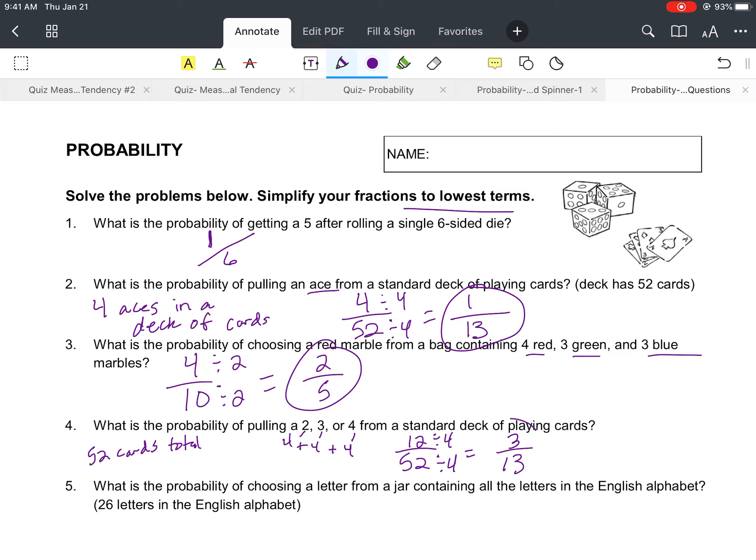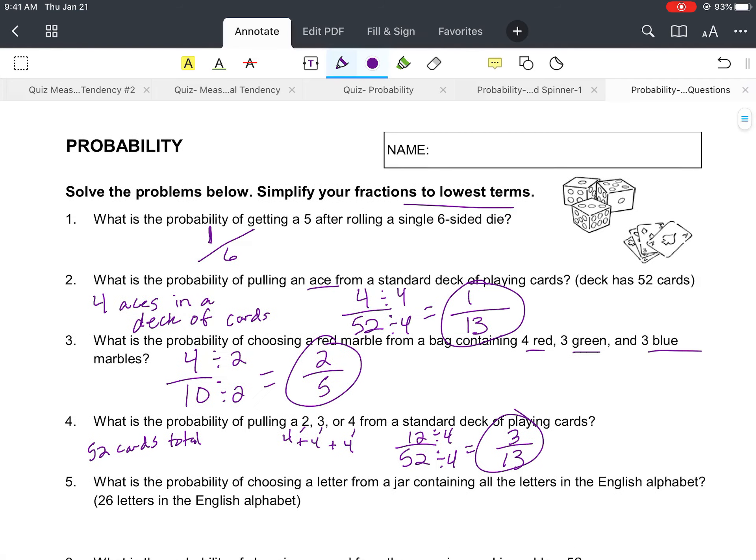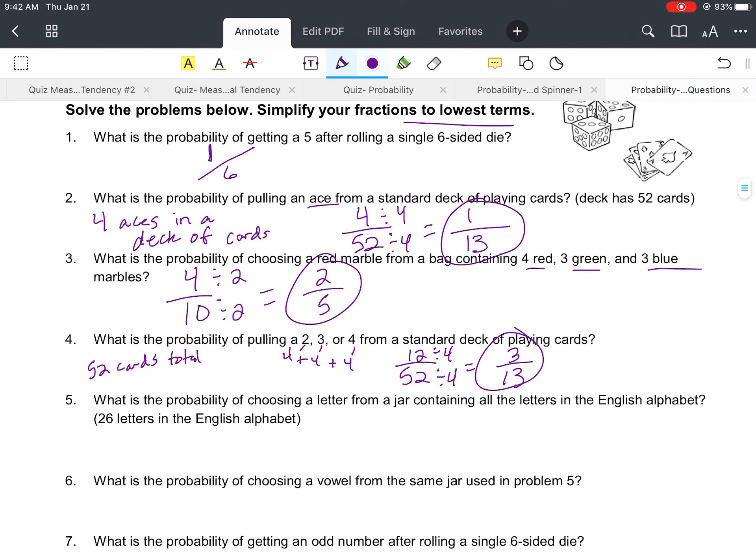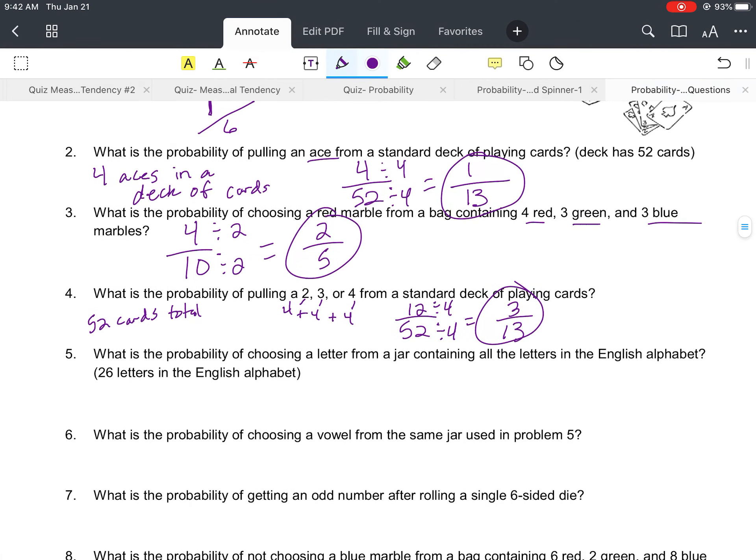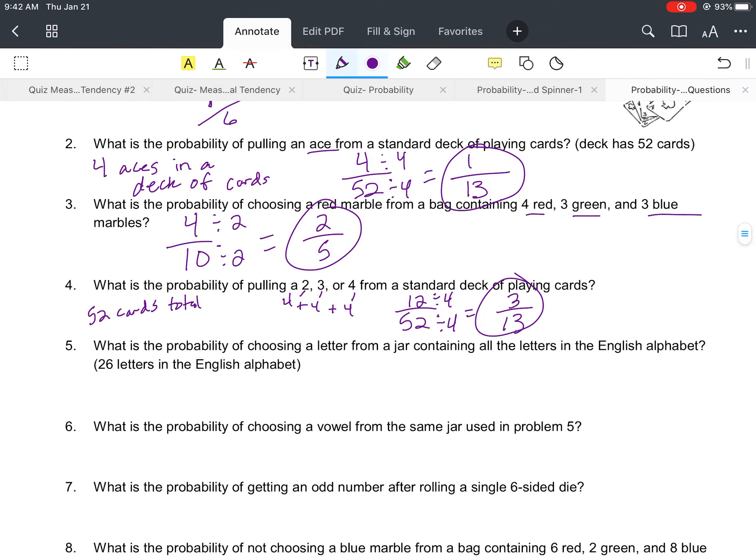12 divided by four gives us simplified three, and 52 divided by four, according to problem number two, got us 13. So three over 13 chances there of pulling a card that has a two, three, or four on it.